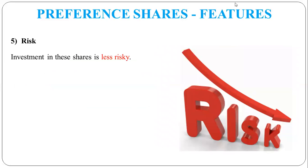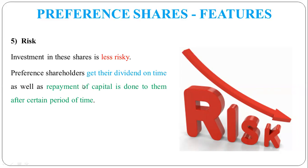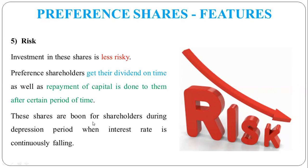The next feature is risk. Preference shareholders bear very low risk because they are assured of their dividend and their capital. Preference shares are especially good during times of depression — when business conditions fall and things don't work well, preference shareholders still receive their fixed dividend. This provides regular income, and because of this safety and regular income, the risk for preference shareholders is very low.